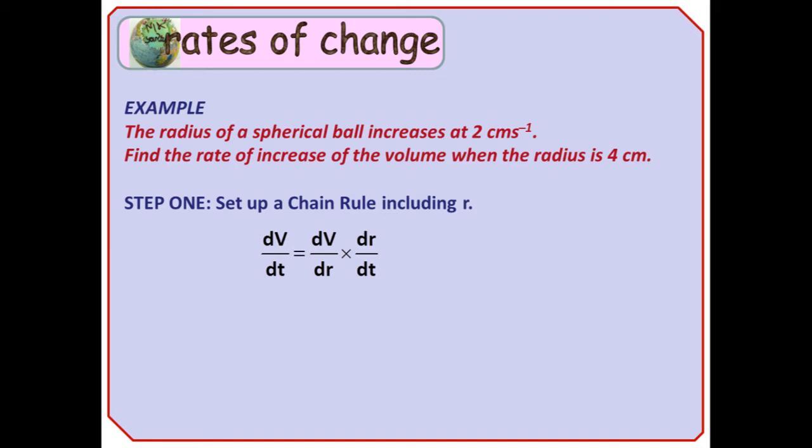Step 1. Set up a chain rule including r. We've been given that dr by dt is 2, and we've been asked to find dV by dt, so we've got to include them.